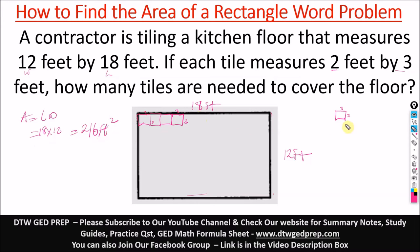We also have to find the area of each tile, to know what space each tile occupies. The area of one tile is length times width, which is 3 times 2, and that gives us 6 square feet.